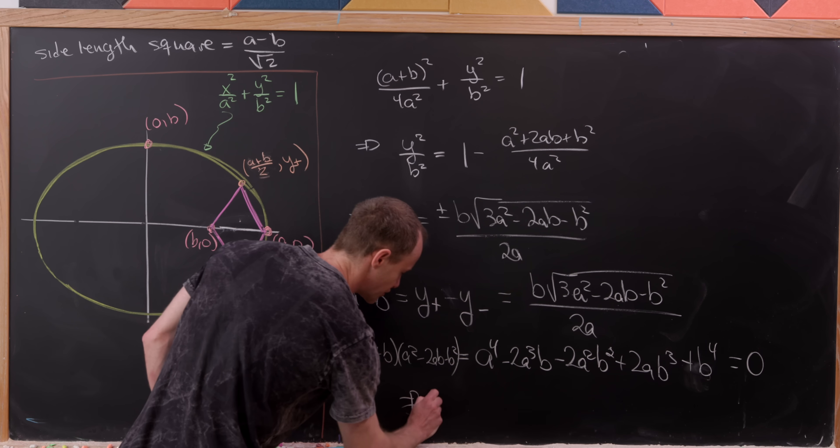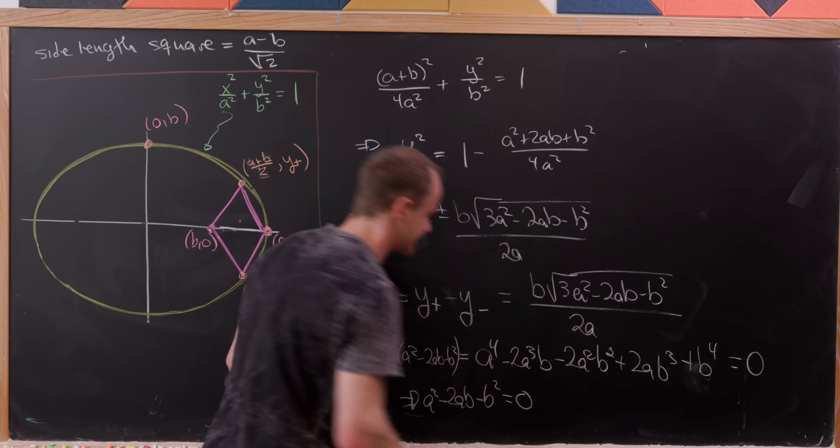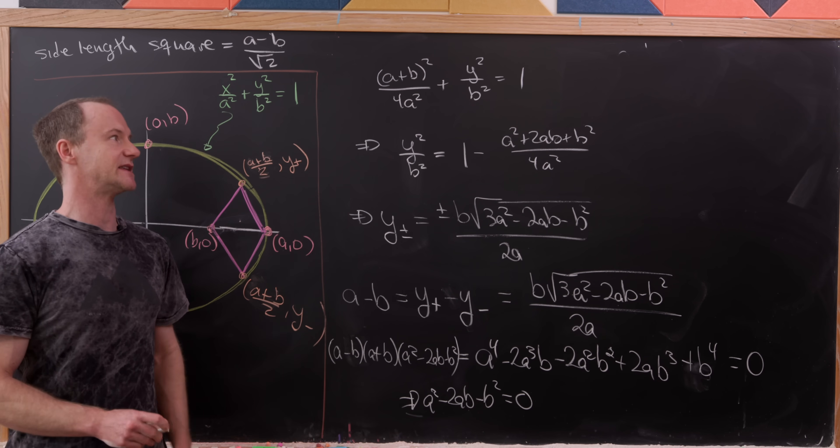So we can't have a + b equal to zero either because both of those are positive. So that means we must have this relationship right here: a² - 2ab - b² = 0. Let's see where that takes us.